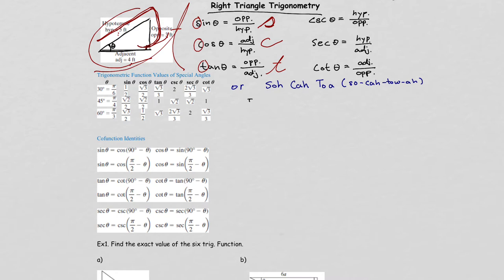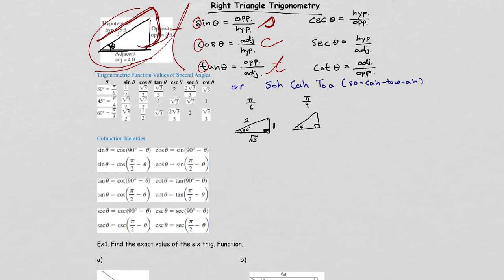For pi over 6, this is the 30-degree right triangle. The hypotenuse is the largest, so it's 2. The opposite of the 30-degree angle is 1, and the remaining side is square root of 3. Since 30 degrees is the smallest angle, the smallest number, 1, should be on the opposite side. For pi over 4, the 45-degree triangle has both legs equal, so opposite and adjacent are both 1 and hypotenuse is square root of 2.